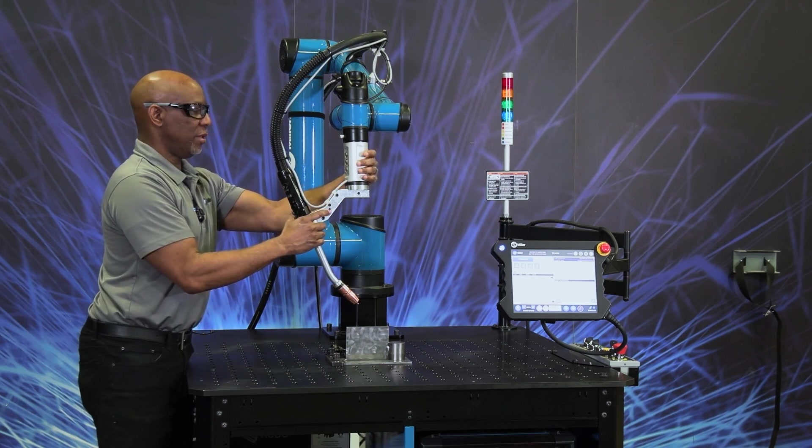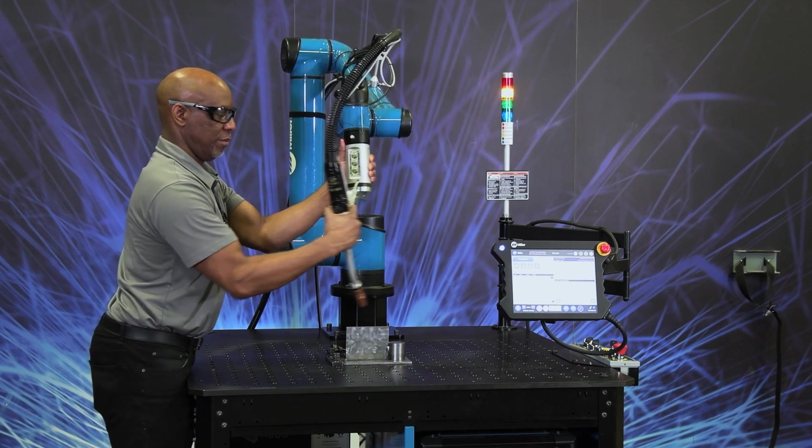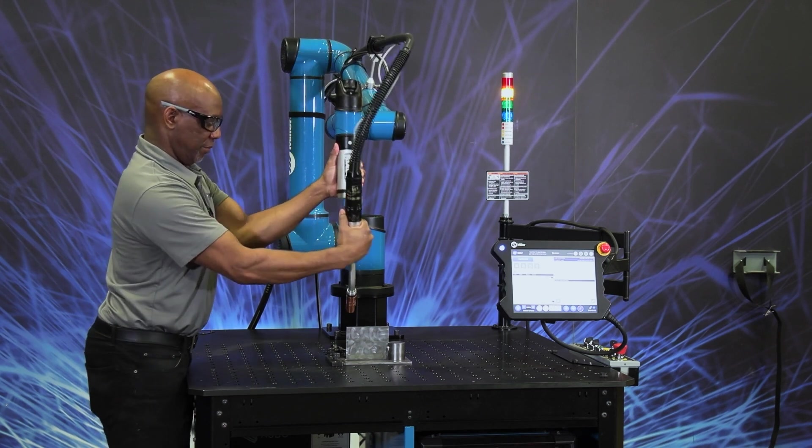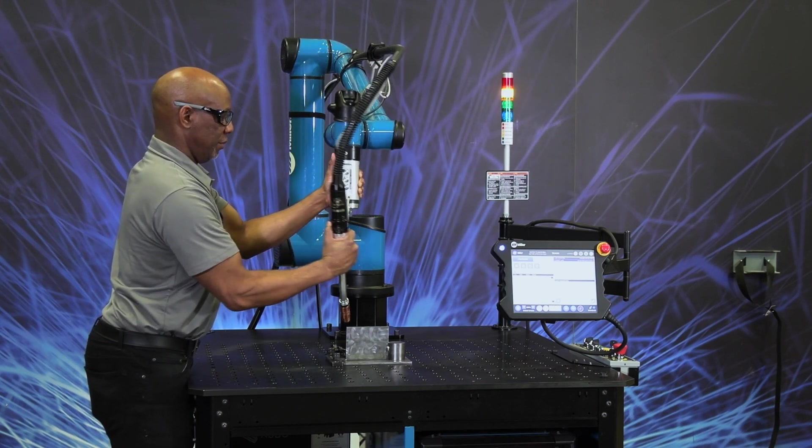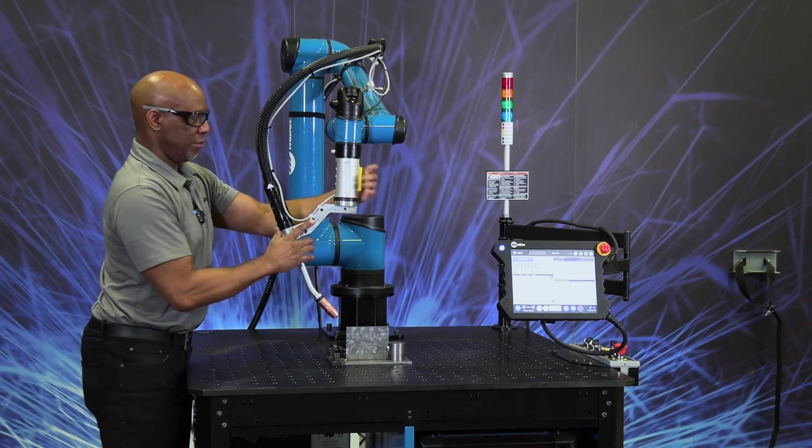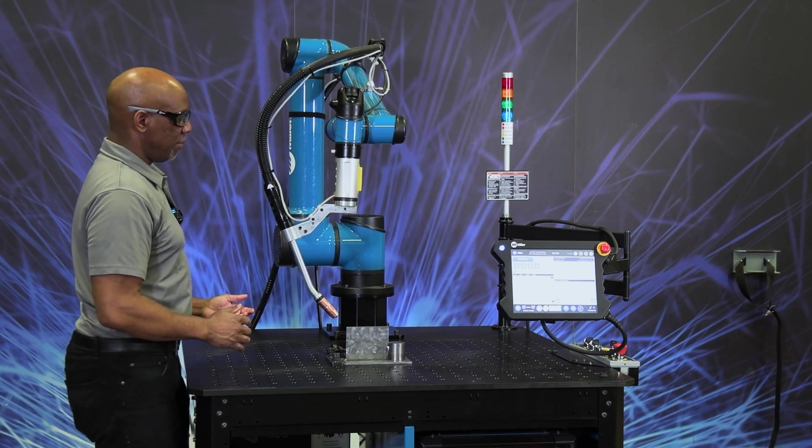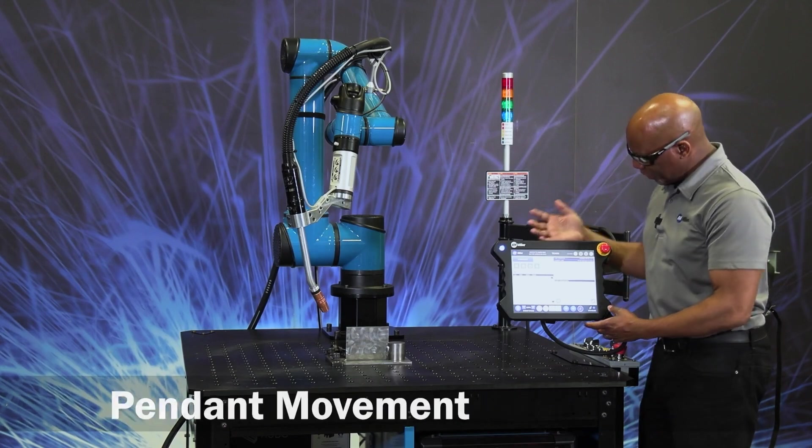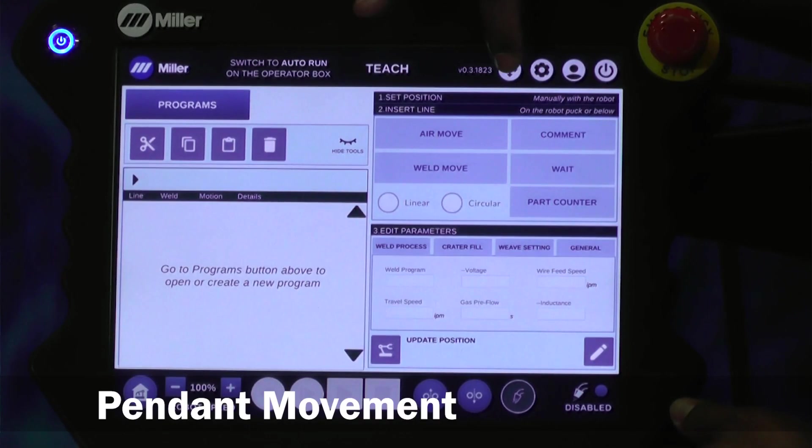That's all there is to that. Another way of moving the Cobot is using the pendant.